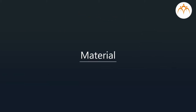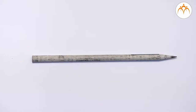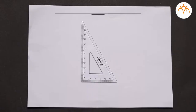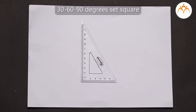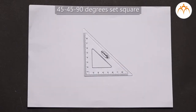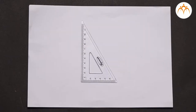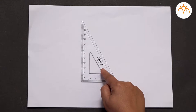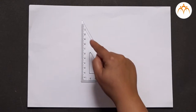Before we begin, let us see the material we require for this construction. We need a pencil, a ruler, a 30-60-90 degrees set square, and a 45-45-90 degrees set square.